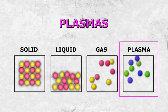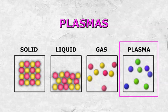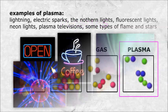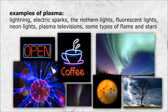Plasmas. Examples of plasma: lightning, electric sparks, the northern lights, fluorescent lights, neon lights, plasma televisions, some types of flame, and stars.